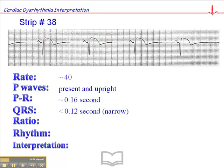So we have a narrow QRS complex, we have a ratio of 1 to 1, we have the rhythm which is regular.